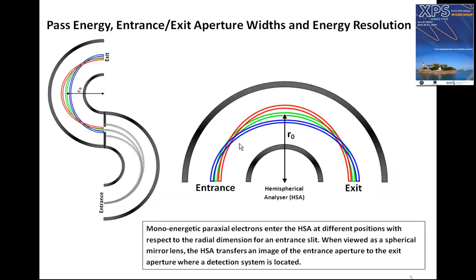To this point we've been considering the analyzer as an energy dispersive analyzer, but in fact a hemispherical analyzer performs two functions. It disperses the energy of electrons, but it also transfers an image of the entrance slit to the exit slit. We can see this more clearly if we consider mono-energetic paraxial electrons arriving at the entrance slit. The paths of these electrons change as a function of their position at the entrance slit, and we end up with an image at the exit slit of the entrance slit with a magnification of minus one.